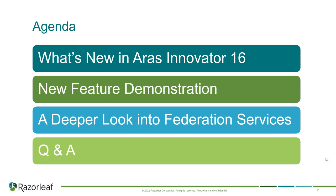We're going to quickly cover what's in Innovator 16, and then we're going to take a deeper look into Federation. The last three releases, we've talked about the things that Eris is doing for Federation. It's gotten more exposed and more available in each one of these releases. I think this will be the last release that we'll see some of the new Federation services. We'll do Q&A and then we'll talk about future marketing events. With that, I'm going to hand it over to Milan.